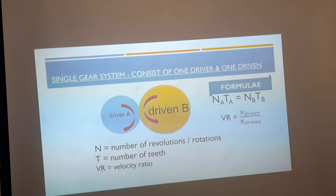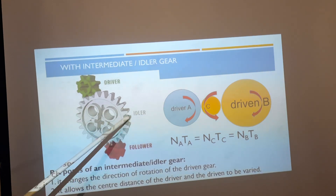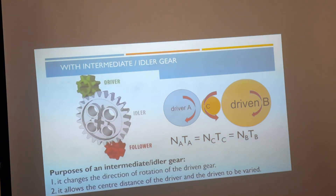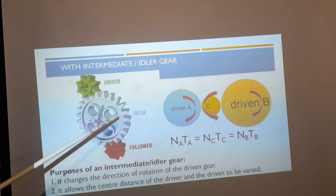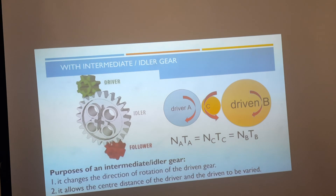N is the number of revolutions or rotations, T is the number of teeth, and VR is the velocity ratio. If there is a third gear, it will be the idler or intermediate gear. The purposes of an intermediate gear are: first, it changes the direction of rotation of the driven gear so it turns in the same direction as the driver gear. Second, it allows the center distance between the driver and driven gears to be varied — you can place it in between to achieve the desired spacing.